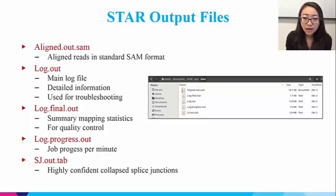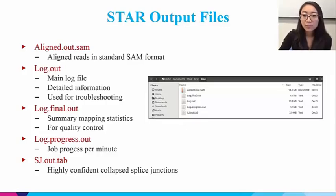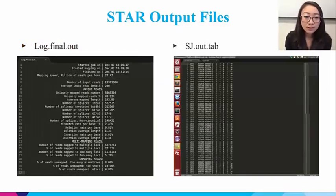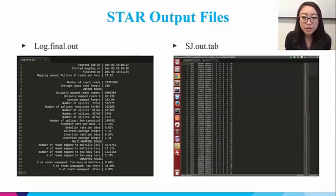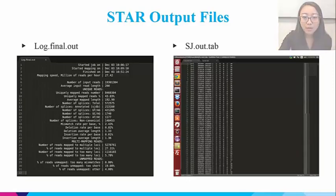The SJ.out.tab file lists high-confidence splice junctions. For example, from the log files you'll get an idea of the mapping speed, basic quality parameters such as mismatch rates, uniquely mapped reads, and reads mapped to multiple loci.